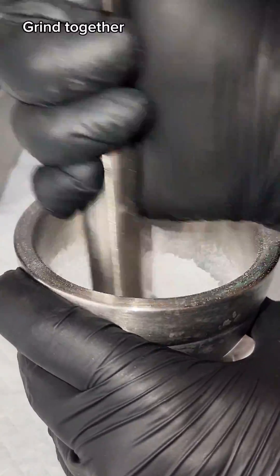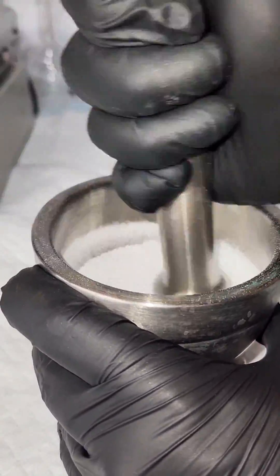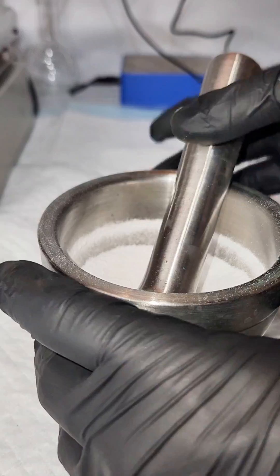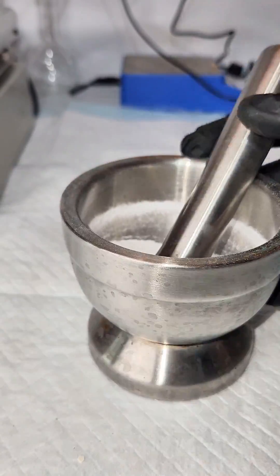Making phthalamide is pretty easy. To get started, all I do is grind together 10 grams of phthalic anhydride and 2 grams of urea in a mortar and pestle.